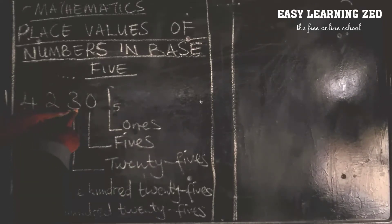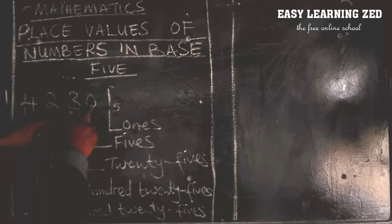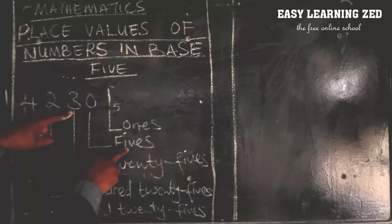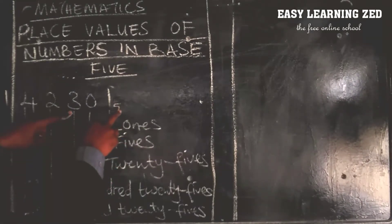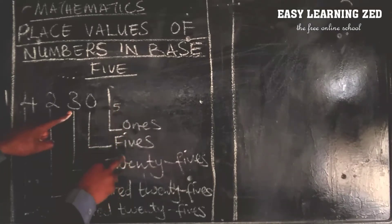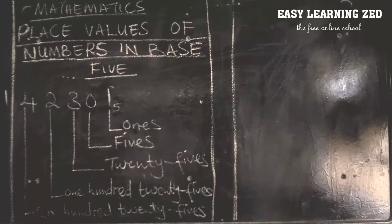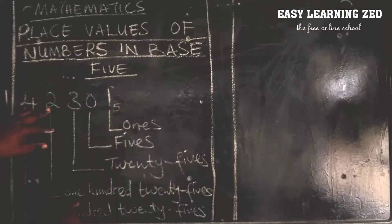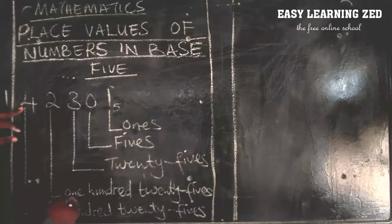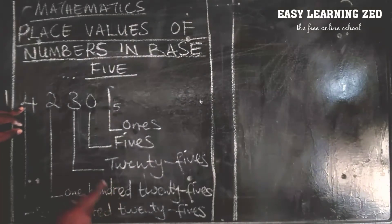To find the place value of the next number, I'm going to multiply the previous place value by five. The place value is five, so five times five gives us twenty-five. To get the next place value we multiply twenty-five by five which gives us one hundred twenty-five.